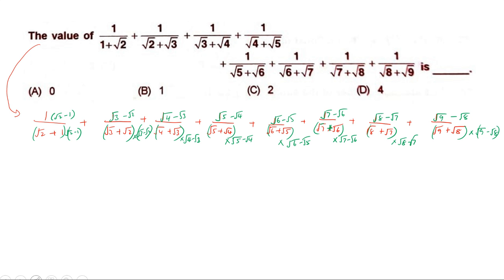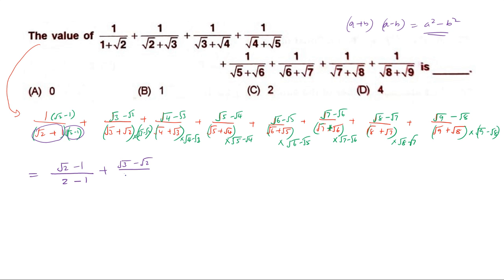You already know the algebraic identity: (a+b)(a−b) = a²−b². The denominator of each term is of the form (a+b)(a−b), so we get a²−b². The first term becomes (√2−1)/(2−1), the second term becomes (√3−√2)/(3−2), and the third term becomes (√4−√3)/(4−3).